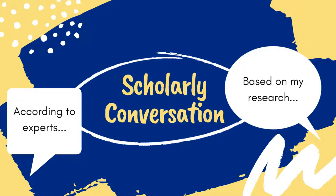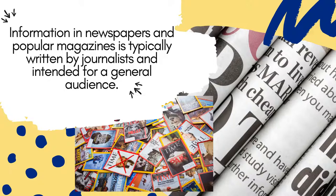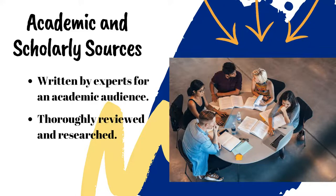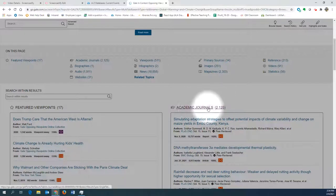Remember that you are working on constructing your own argument and adding to the scholarly conversation about your topic, so you want to avoid reiterating or summarizing basic information. You might also see many magazine or newspaper articles available on a topic. While these are important sources of information, they also might not be the best choice for your academic writing, as they are written primarily by journalists for a general audience. Articles listed under academic journals are written by experts for other scholars, researchers, and college students, making them a great source of accurate and well-researched information when writing college-level essays.